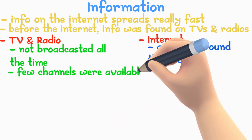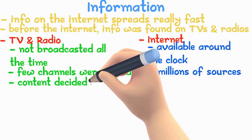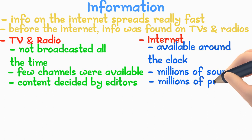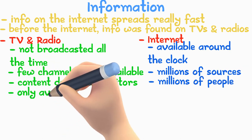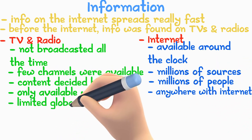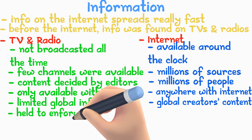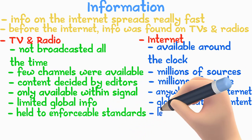With TV and radio, only a few channels were available, whereas there are millions of sources to check online. Content is decided by editors on TV, but millions of people create millions of content online. TV and radio are only available within signal range, while the internet is accessible anywhere. TV and radio are limited when it comes to global info, whereas online you get different content from global creators. Some content is geo-restricted online, and there are hardly any standards checks.